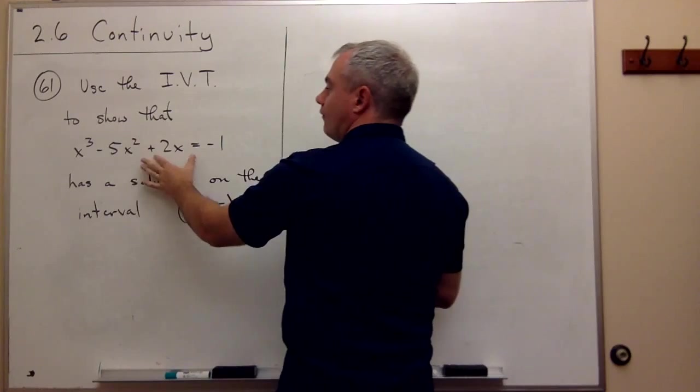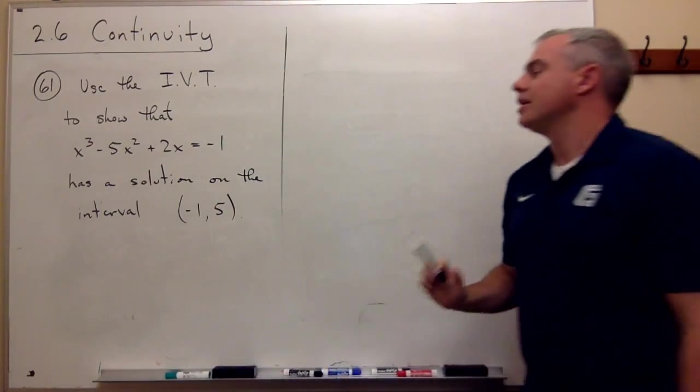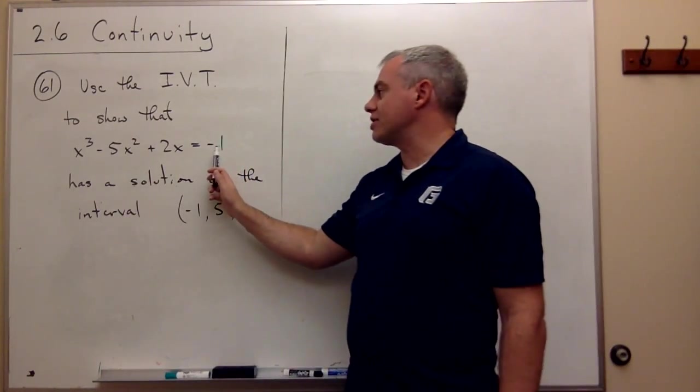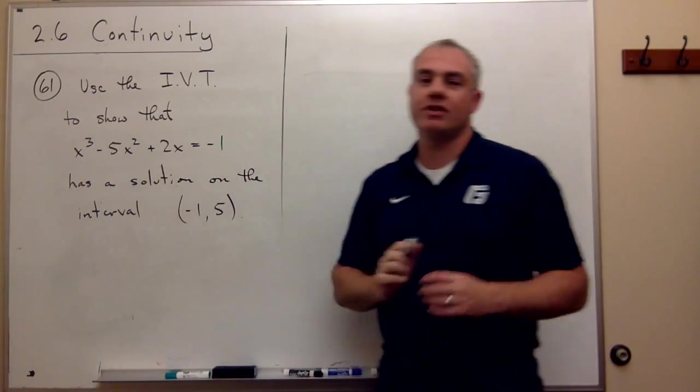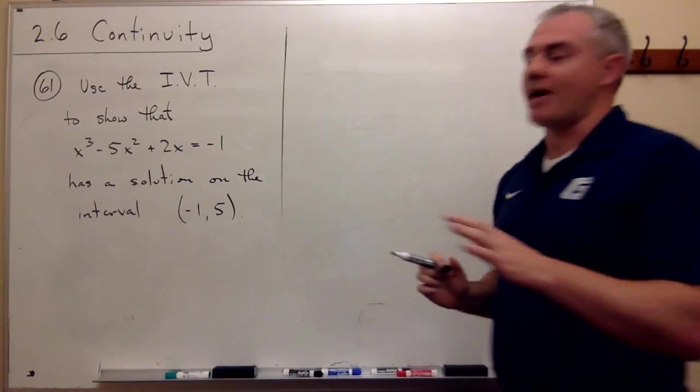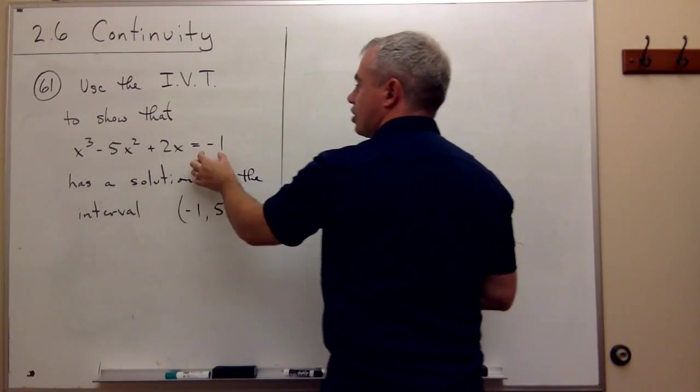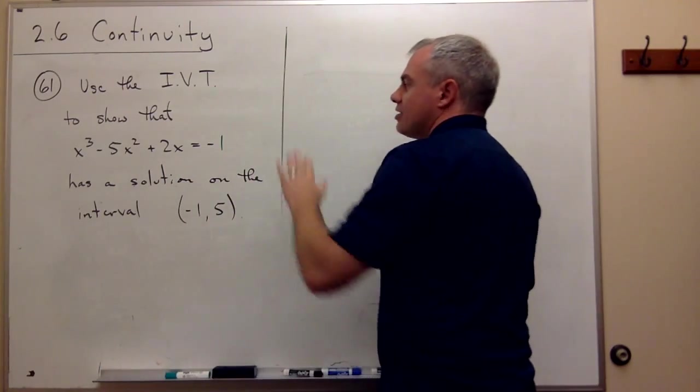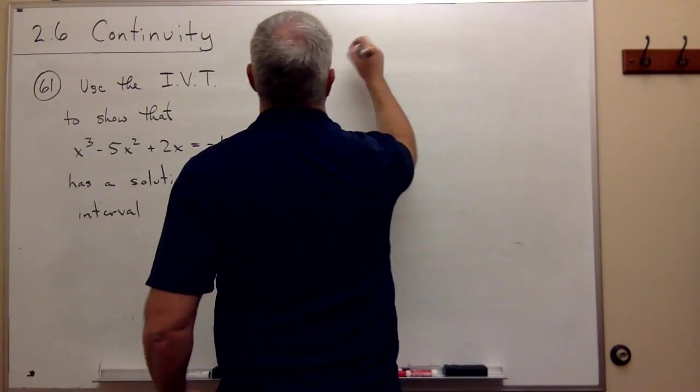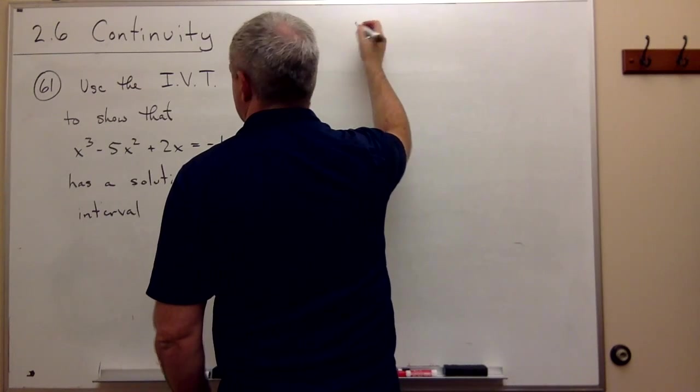So what I'm going to do is take this minus 1 and move it to the other side to get away from having two sides of this equation. I just want a 0 on one side. So let's move the negative 1 over, and what I'm really looking at is this equation.